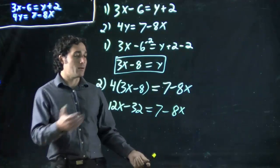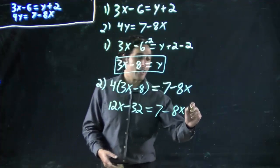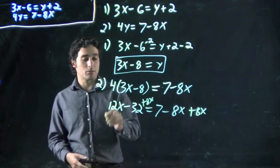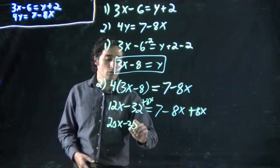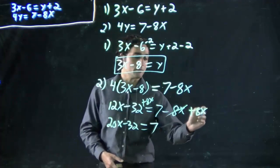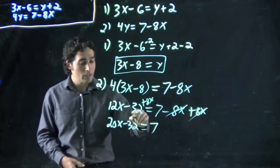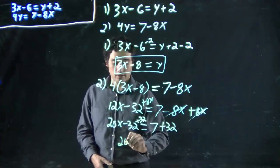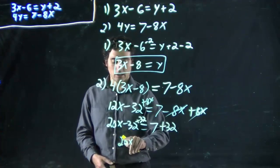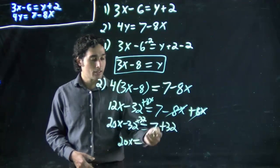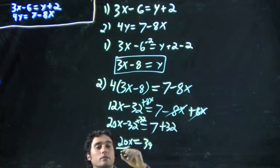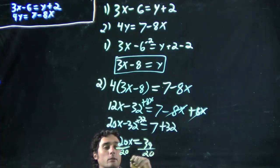12x minus 32 equals 7 minus 8x. I want to get x's on one side, numbers on the other. I can bring the 8x over if I add 8x to both sides. 8x plus 12x is 20x minus 32, and that's equal to 7. I want to bring the numbers over, so plus 32. 20x equals 39. And finally, I want to get x on its own, so divide by 20. We get x equals 39 over 20.